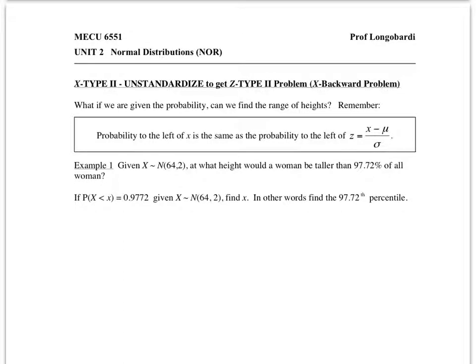We have covered Z Type 1 and 2, and X Type 1 problems. Now we are at X Type 2 problems, which essentially are unstandardizing to get to the regular Z Type 2 backward problem. This is how we're going to approach problems where you're given the percentage and asked to find the units, in this case height.